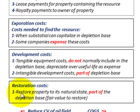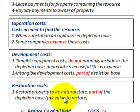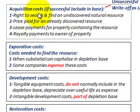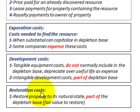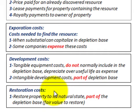Restoration costs are where you restore the property to its natural state, and that's part of the depletion base. It's based on the fair value to restore it to its natural state. So we've defined our four different items: acquisition costs, exploration costs, development costs, and restoration costs — those are the four different factors that determine what goes into the depletion base.